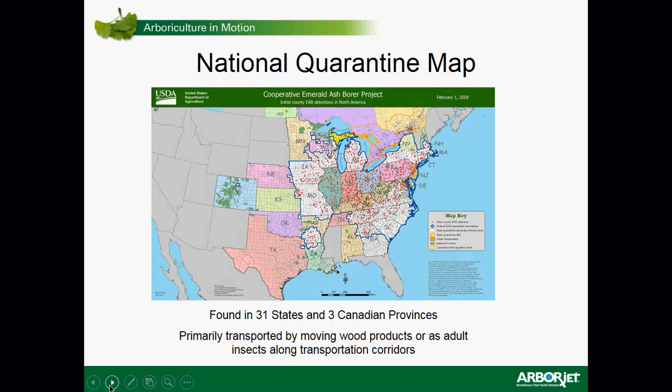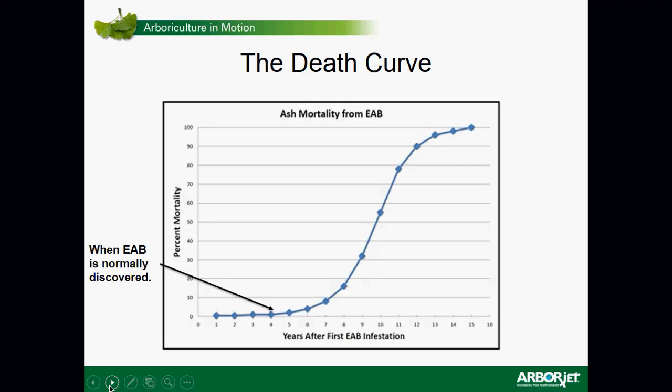A couple of notable states — Maine and Vermont — have not detected EAB yet, but that does not mean it's not there. It's just very difficult to detect. Usually when we find Emerald Ash Borer, it's been in the area for three or four years at minimum — it does not do enough damage in early infestations to notice symptoms. We don't notice many trees dying right away; it takes several years for insect populations to build up, and then the trees start dying exponentially.